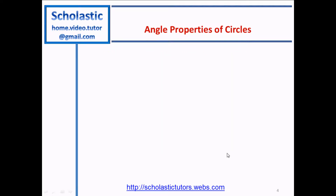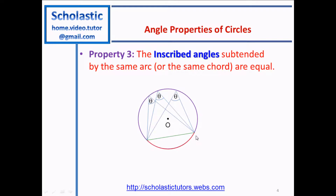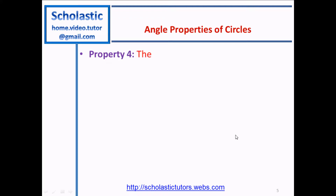Property 3: the inscribed angles subtended by the same arc or the same chord are equal. In this case the arc is in red and the chord is in green. You can draw from any point on the remaining part of the circle and the inscribed angles will both equal θ. If you plot a point on the arc side instead, you would get a different angle.